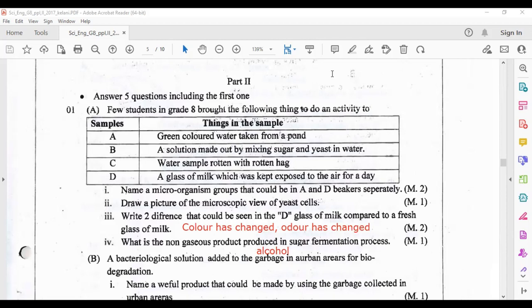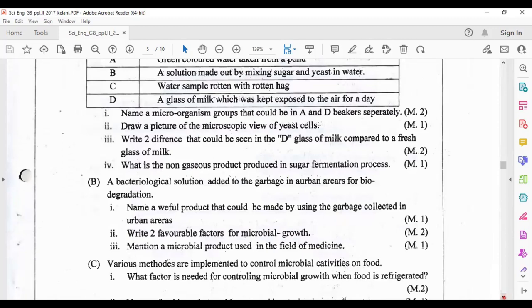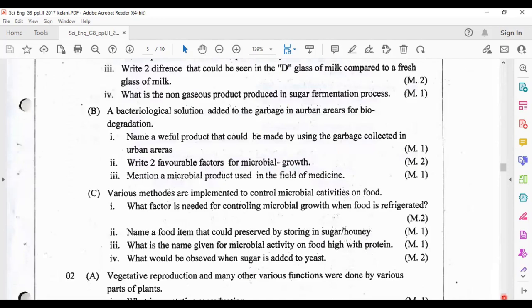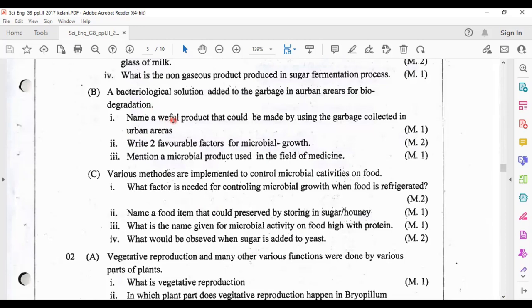What is the non-gaseous product produced in the sugar fermentation process? That is alcohol. The gaseous product is carbon dioxide. A bacteriological solution added to the garbage in urban areas for biodegradation - name a useful product that could be made by using the garbage collected in urban areas. That is compost.